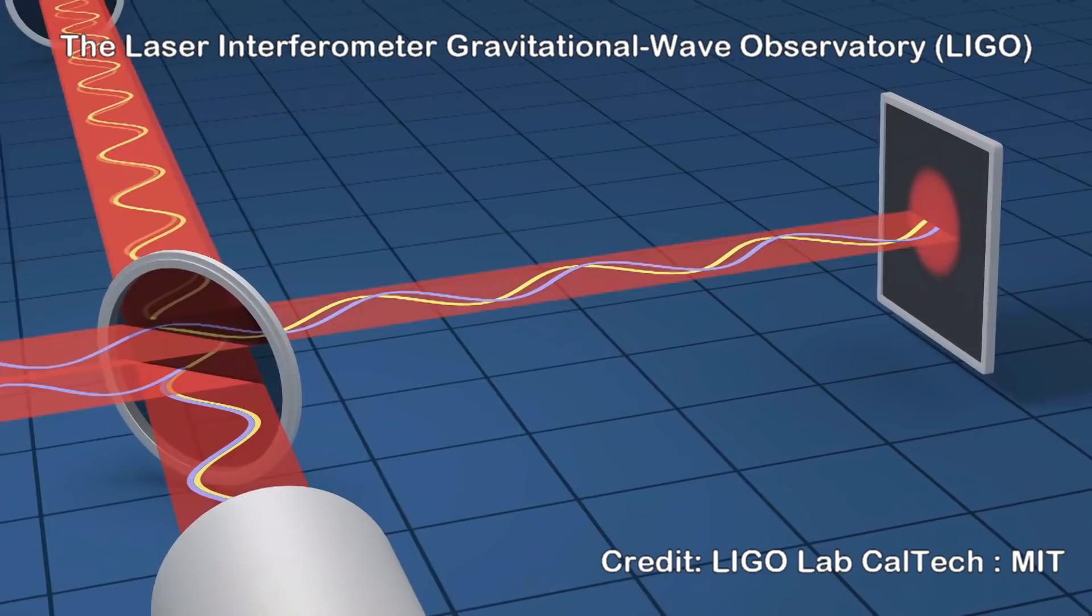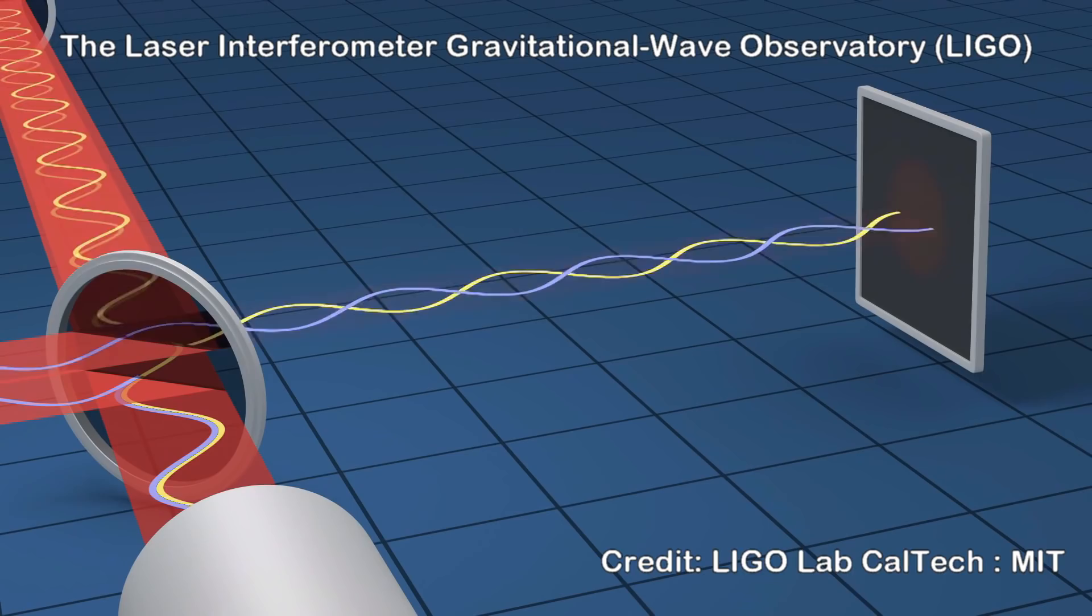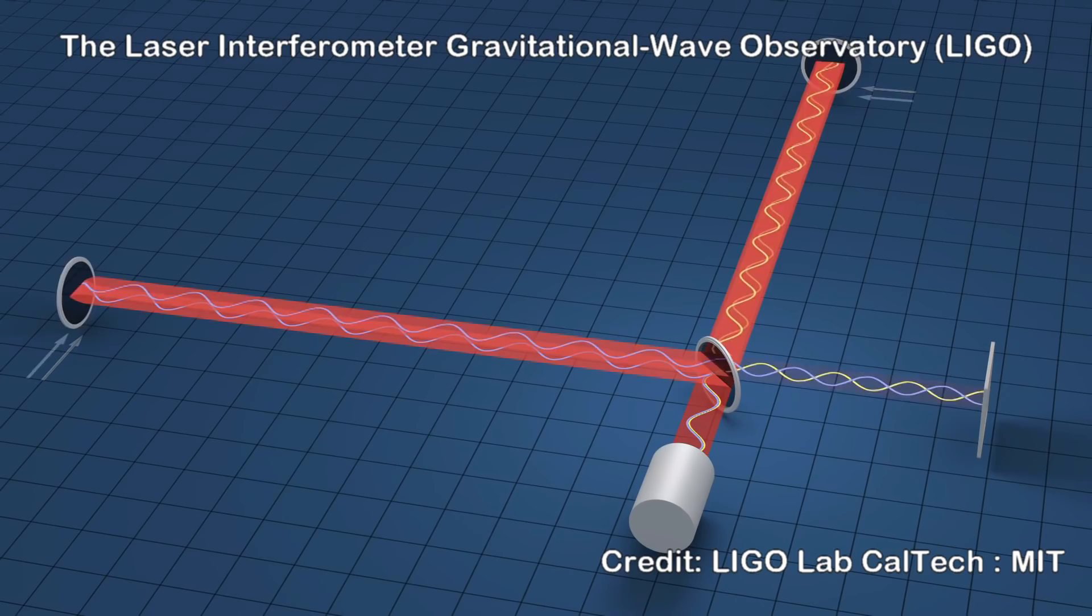If space is warped by a gravitational wave, one of the vacuum tubes is going to get slightly longer or shorter and this will cause the light waves to move out of sync with one another so destructive interference doesn't happen and the detector detects the light. The more out of sync the waves are, the more light is detected, so that's where our incredible resolution comes from.